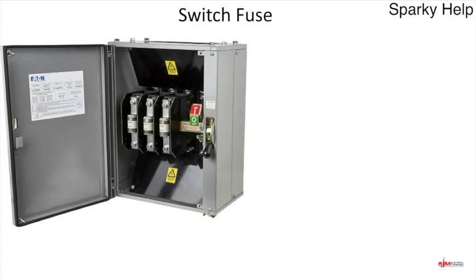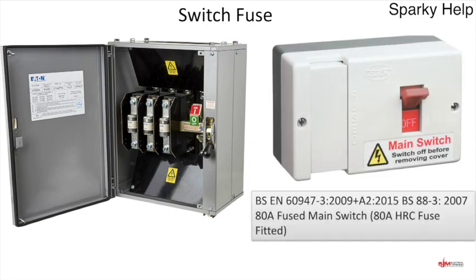Or you could have a fused switch. Here's a fused switch — this is Eaton, formerly MEM. When you throw this switch, the fuses in the centre actually make the switching process. You can put BS88 type fuses in there of various types and sizes up to the rating of the switch — so if this is a 100 amp switch, up to 100 amp. Or you can have a BS88-3 80 amp fused main switch installed within an installation. Remember, these will be overcurrent protected devices, so under fault conditions these particular devices will switch off.